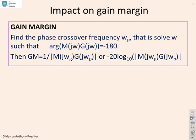So how is gain margin defined? Well, here's the formula. We solve for the phase crossover frequency, omega p. And then we solve omega such that the argument of mg equals minus 180. And then the gain margin is 1 over modulus of m, modulus of g. And again, that subscript has gone wrong. Or, if you put it into decibels, minus 20 log to the base 10, modulus of mg.